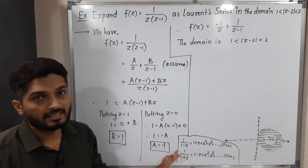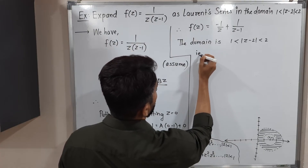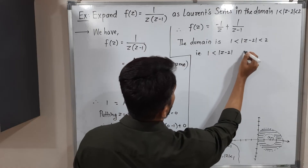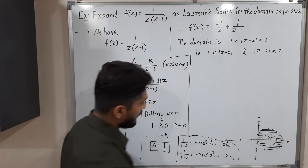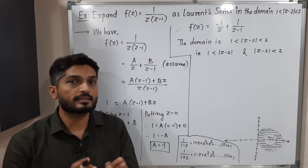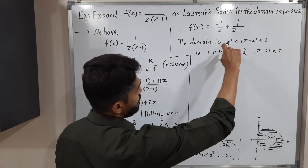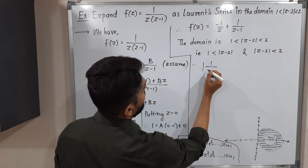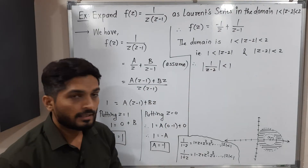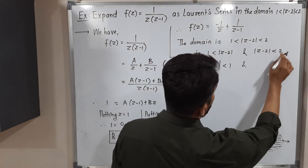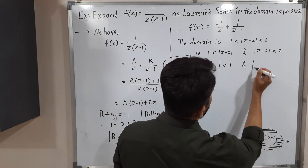We split the given condition into two parts: 1 < |z-2| and |z-2| < 2. For our series, we always want 1 on the right-hand side. For the first part, shifting |z-2| to the denominator gives |1/(z-2)| < 1 — condition satisfied. For the second part, dividing by 2 gives |（z-2)/2| < 1 — also satisfied.